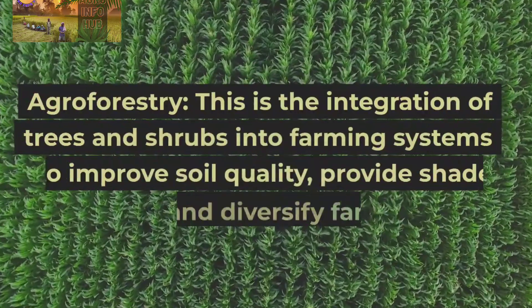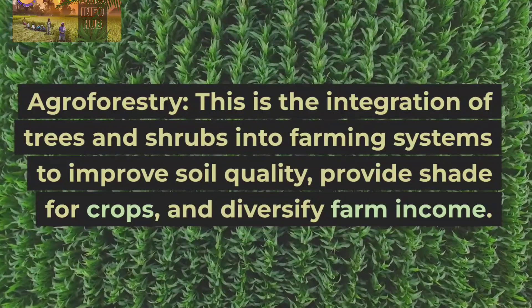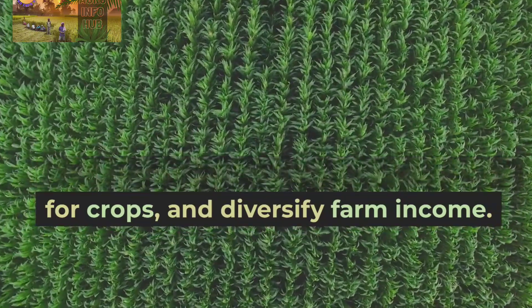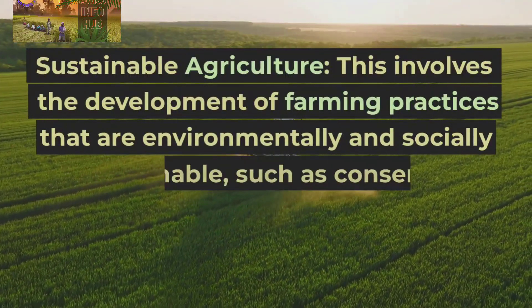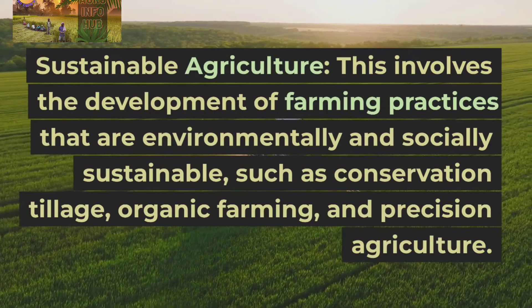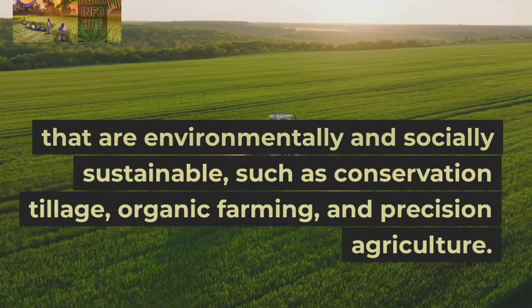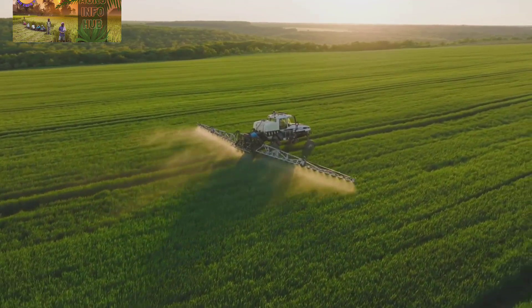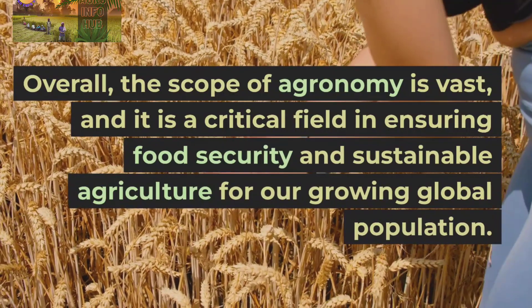Agroforestry is the integration of trees and shrubs into farming systems to improve soil quality, provide shade for crops, and diversify farm income. Sustainable agriculture involves the development of farming practices that are environmentally and socially sustainable, such as conservation tillage, organic farming, and precision agriculture.